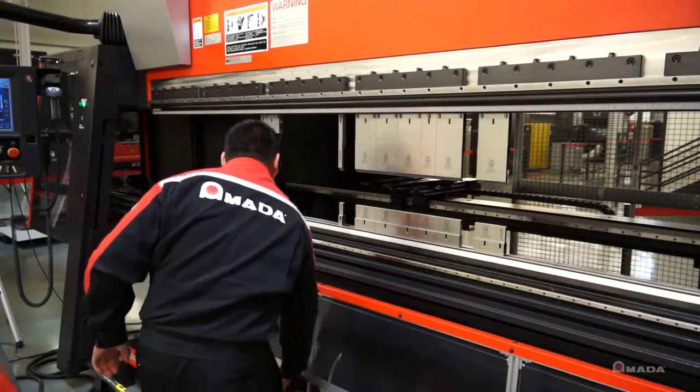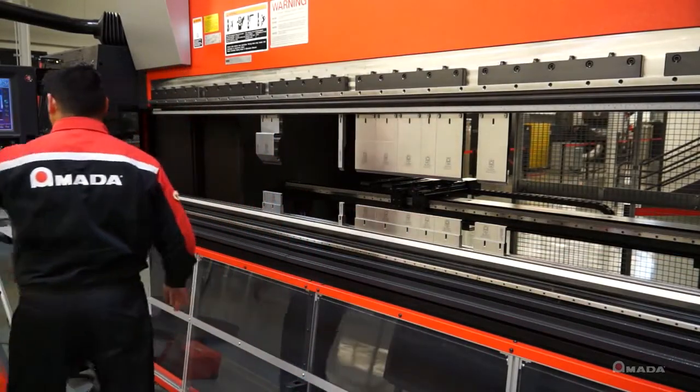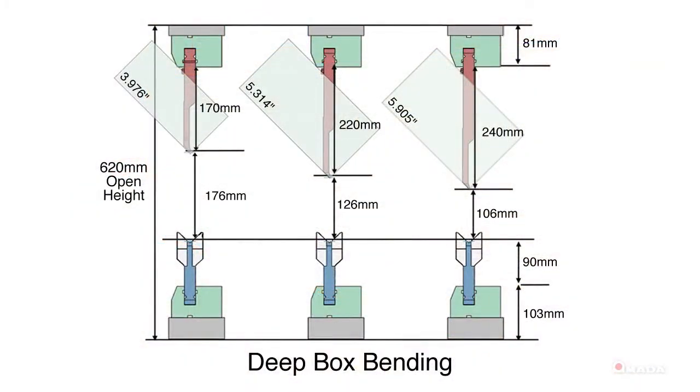Once the tools are loaded, the operator can start bending. The HDATC has an extended open height of 24.4 inches, allowing you to maximize part processing and deep box bending by using punches up to 9.4 inches.